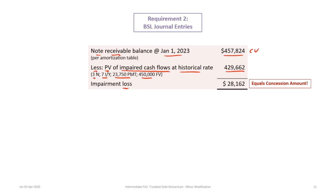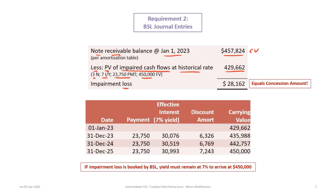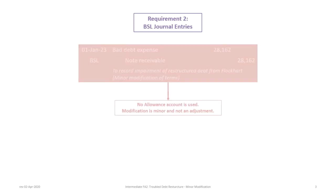The carrying value of the debt is $457,824 and the new value of future cash flows is $429,662. The revised amortization table shows the new carrying value must be $429,662. Discounting at seven percent for three more periods — 2023, 2024, and 2025 — we arrive at $450,000 at the end of December 2025. If BSL books the impairment loss, the yield must remain the same at seven percent in order to arrive at $450,000.